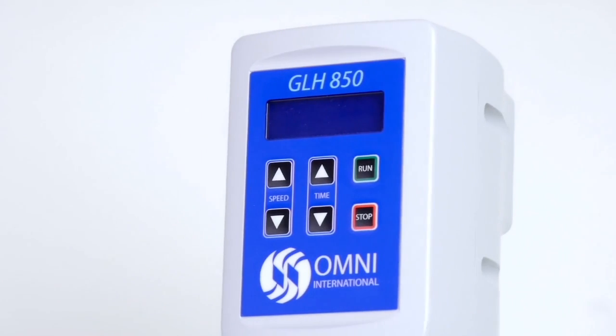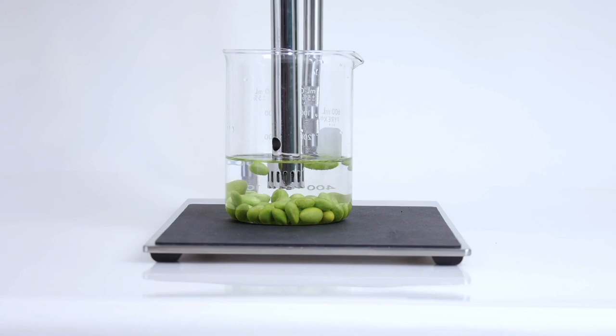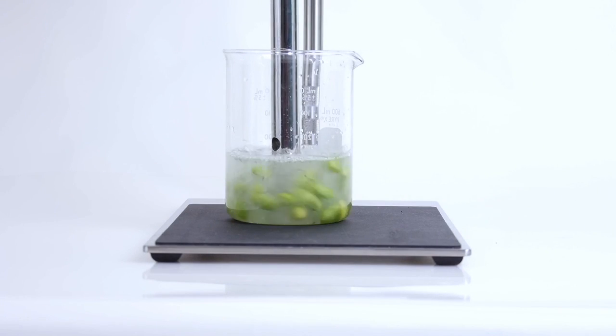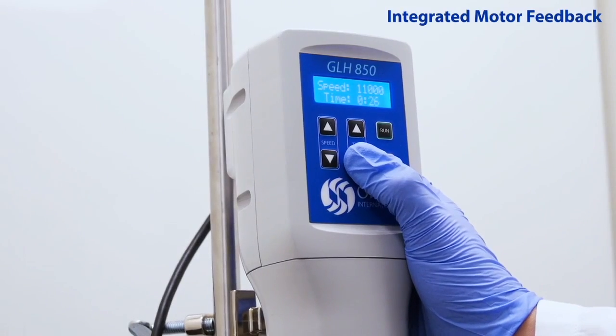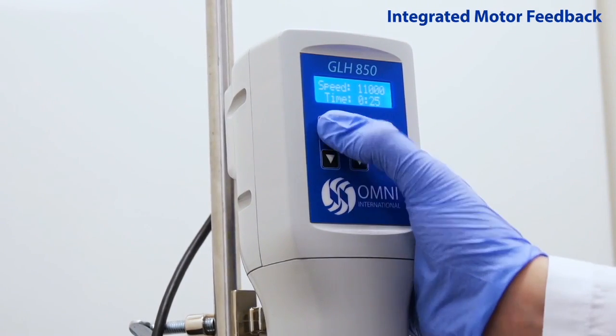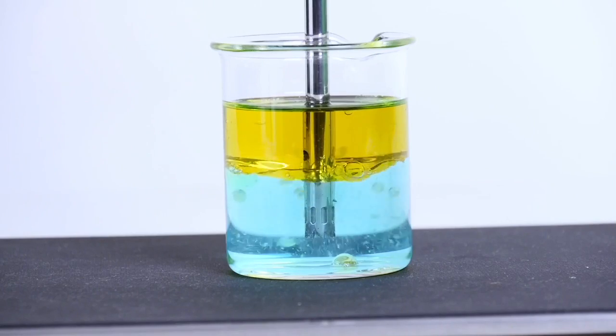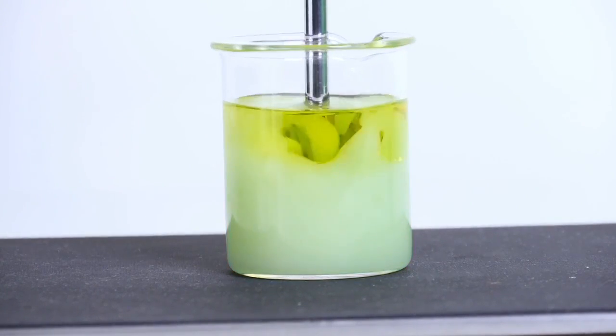The GLH 850's robust processing ensures complete homogenates and uniform particle size distributions. The integrated motor feedback holds set speeds during homogenization to ensure repeatable results regardless of any fluctuations in sample viscosity.